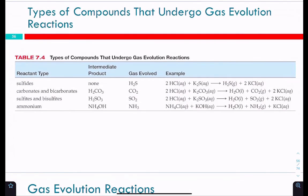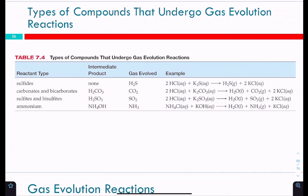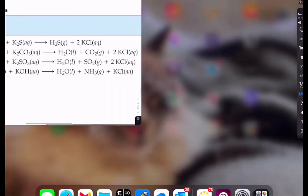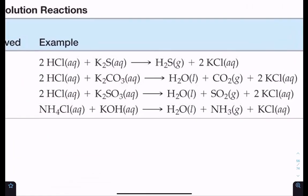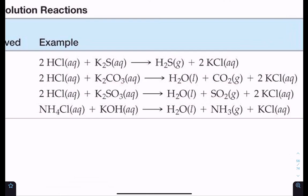Two unstable intermediate acids to know: H₂CO₃ (carbonic acid) and H₂SO₃ (sulfurous acid). Either time you get one of those, they will decompose. Their products are similar: water and CO₂ for H₂CO₃, and water and SO₂ for sulfurous acid H₂SO₃.